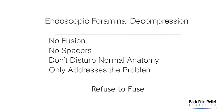What are the main benefits of endoscopic foraminal decompression? There are three main benefits. Number one: no fusion or spacers, so there are no long-term consequences like adjacent disc disease, which is common at the bookends if a fusion is performed. Number two: it doesn't disturb the normal anatomy — we're only shaving off a spur or shark's tooth, some overgrowth of bone and soft tissue, restoring the foraminal canal to its normal dimensions. Number three: this treatment approach only addresses the problem — it doesn't create any problems. As I like to say, refuse to fuse when possible. The body has great potential to heal itself and doesn't need a fusion for the majority of problems.